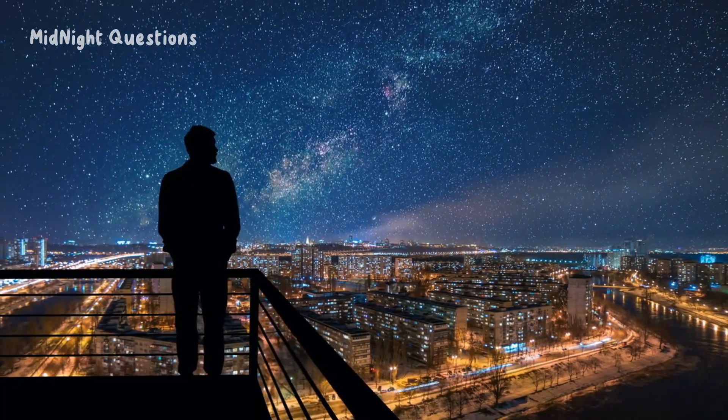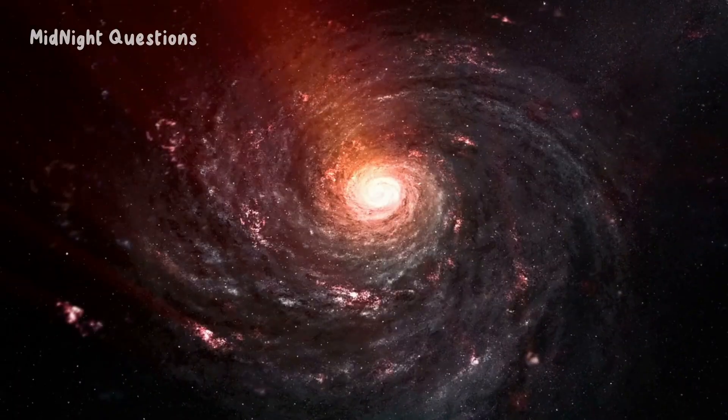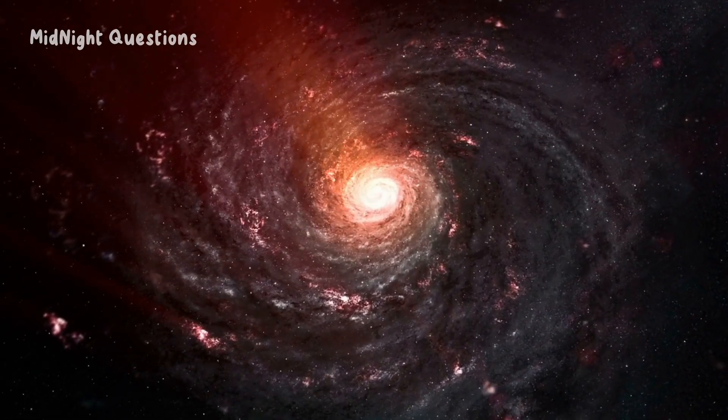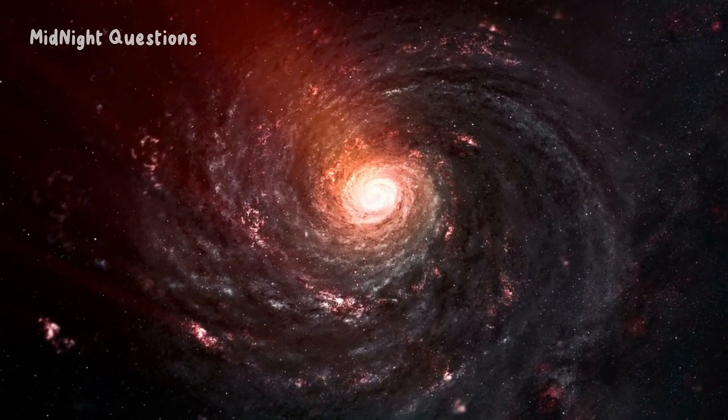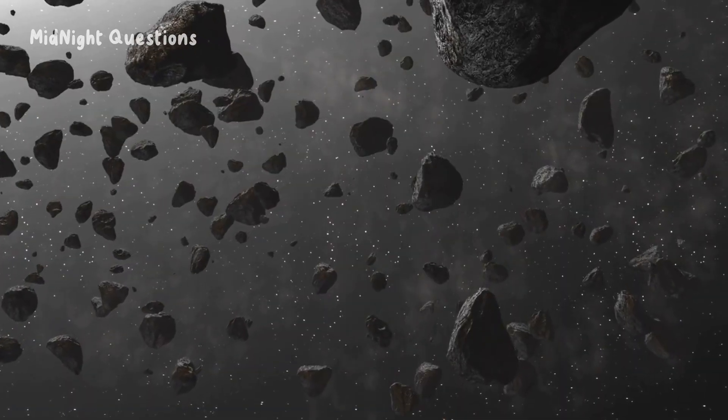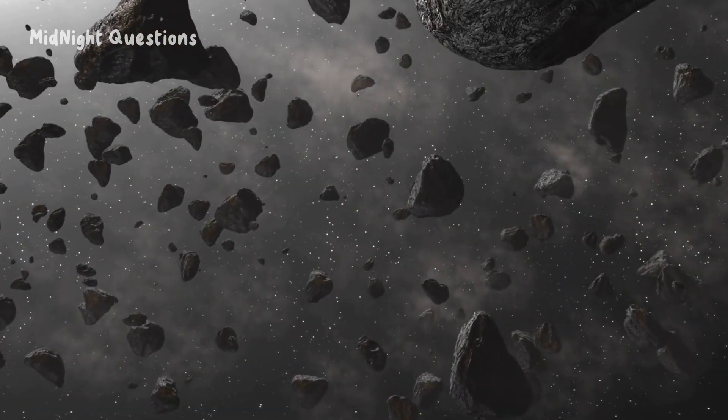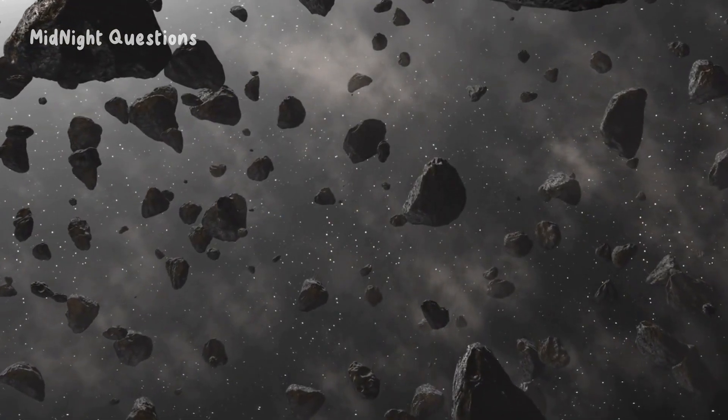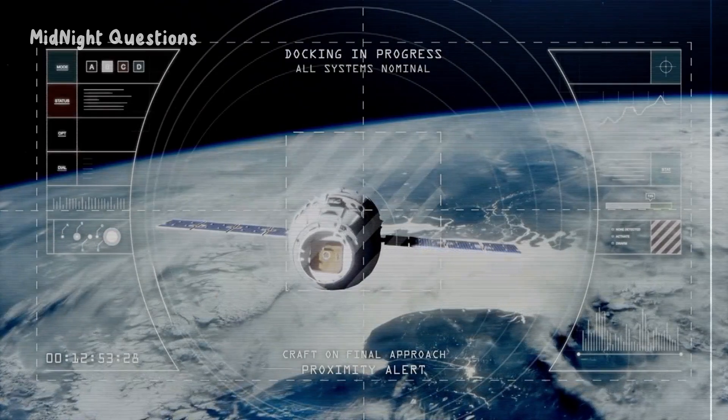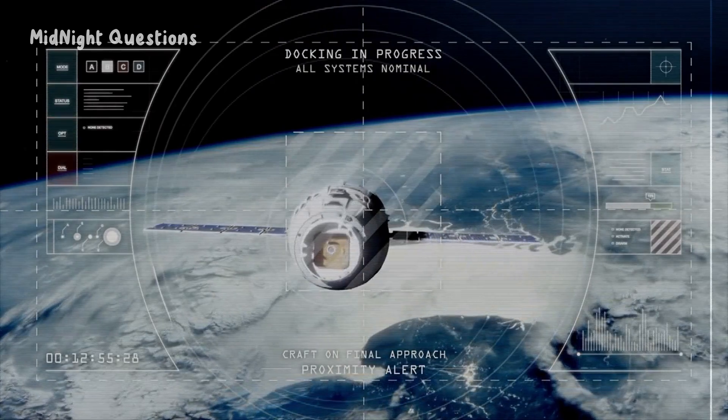The danger of space debris lies in its high speed. Objects in orbit around the Earth are moving at incredible velocities, often several kilometers per second. Even small pieces of debris can cause significant damage if they collide with a spacecraft or satellite. This can lead to the loss of critical systems and even the destruction of the entire spacecraft.